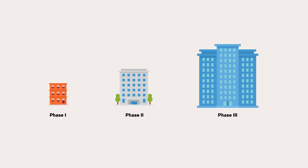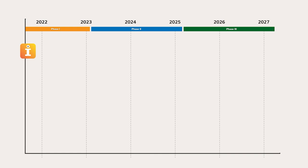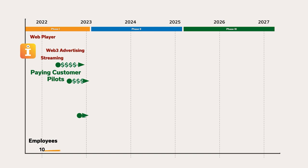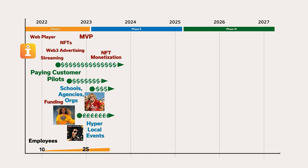Let's visualize these three phases of our business into a five-year roadmap. 2022 starts off with the release of our prototype tool. We'll then develop our web player, which will allow us to start pilots with paying customers. 2022 also sees the evolution of our Web3 advertising platform and the inclusion of NFTs. The code evolves and we end phase 1 and begin phase 2 with the launch of the MVP. Once we have an MVP in 2023, we can start to approach celebs and high-profile brands and evangelize creators in digital agencies and schools.